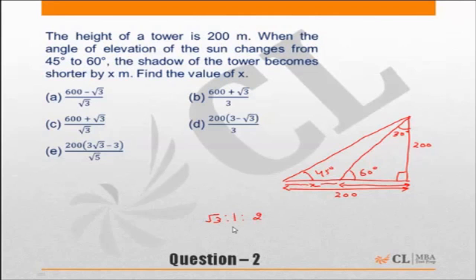That means this is going to be the side opposite to 30 degrees, this is the side opposite to 90 degrees, and this is the side opposite to 60 degrees.